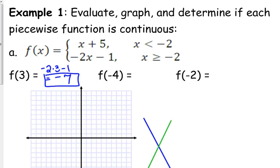f of 3 is negative 7. It is not 8 — 8 would be the other piece of the function. For f of negative 4, you've got to figure out which one applies. Negative 4 is less than negative 2, so we're going to plug negative 4 into the first one. Negative 4 plus 5 is 1, so f of negative 4 is 1.